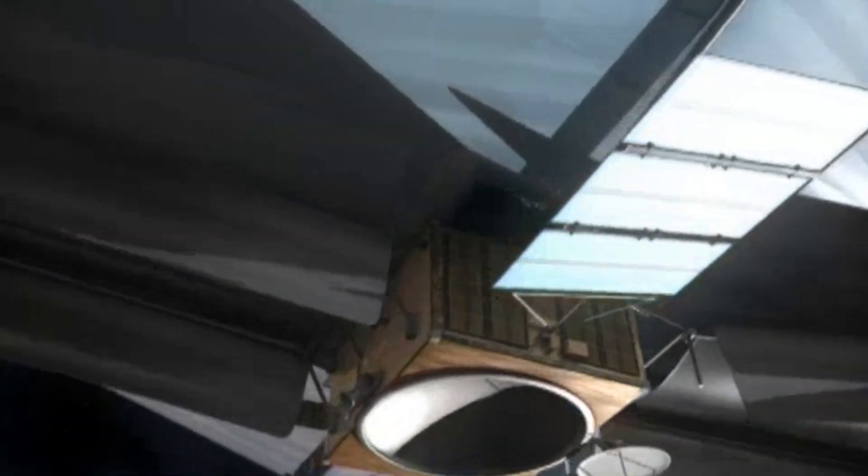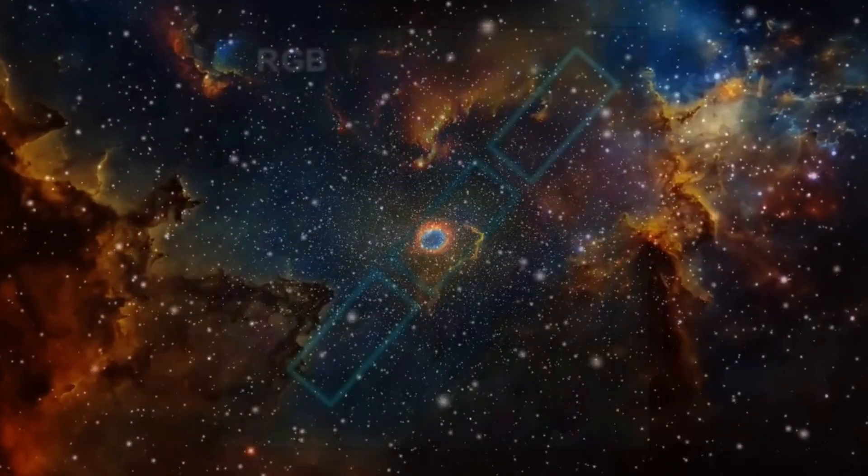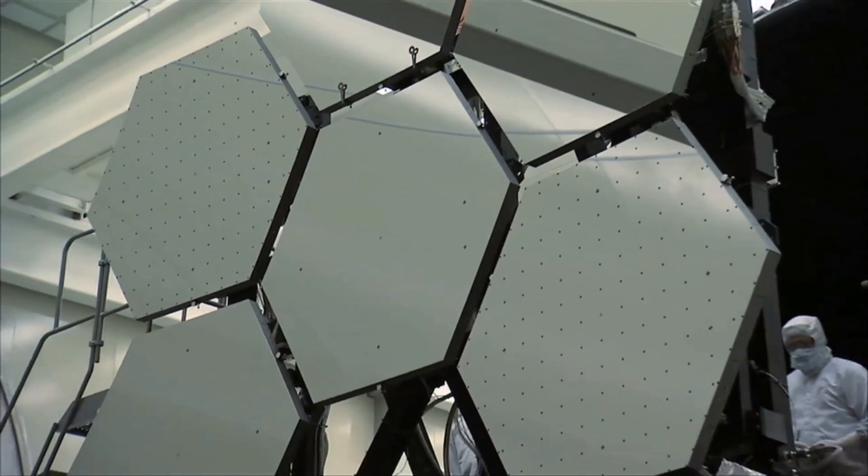So far, the James Webb Telescope has completely changed our view of the universe with its unexpected discoveries in the early universe. From the discovery of early galaxies to early black holes and other early celestial objects, it never fails to surprise us.